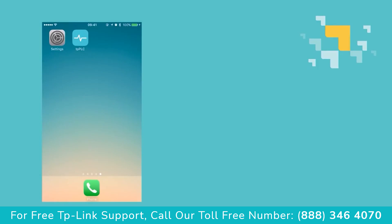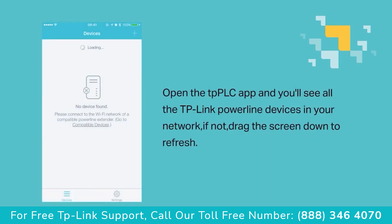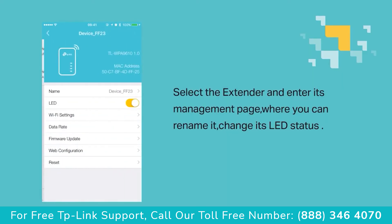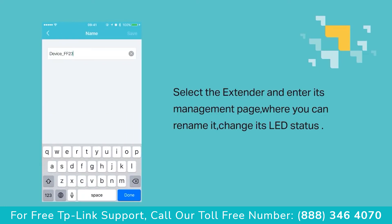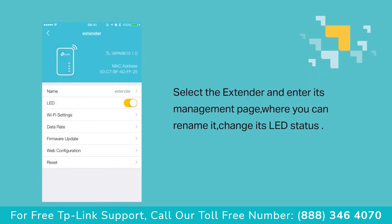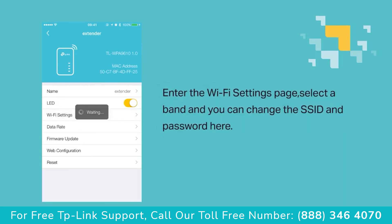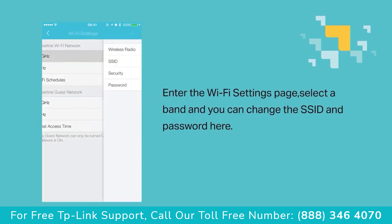Third method: open the TP-PLC app and you'll see all the TP-Link Powerline devices in your network. If not, drag the screen down to refresh. Select the extender and enter the management page where you can rename it and change its LED status. Enter the Wi-Fi settings page, select a band, and change the SSID and password.